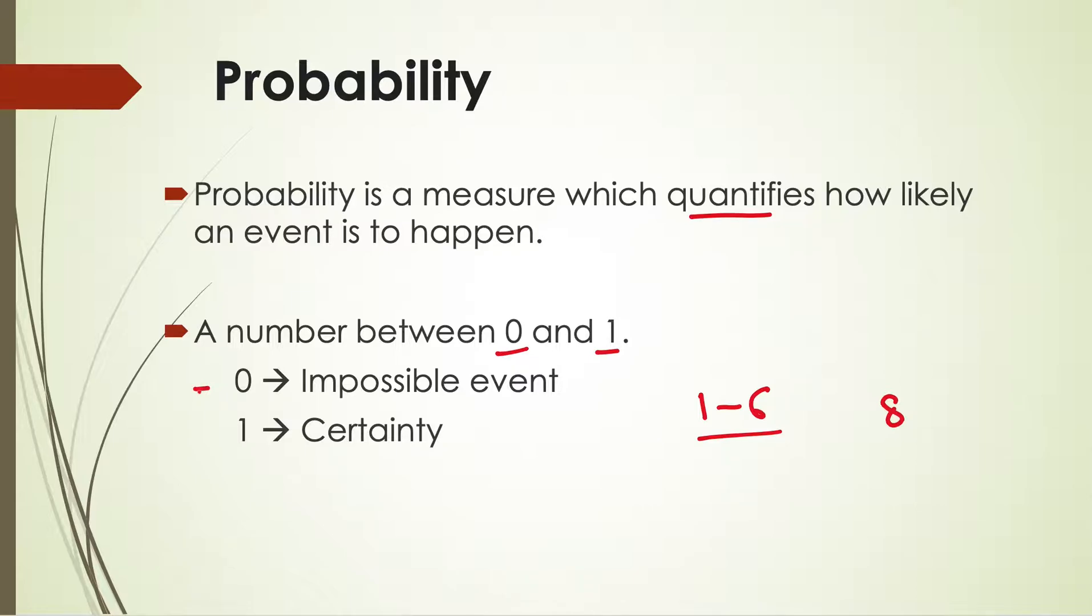On the other hand, if we say what is the probability that the value is between one and six inclusive, then it will be certainty because its value will definitely be between one and six.